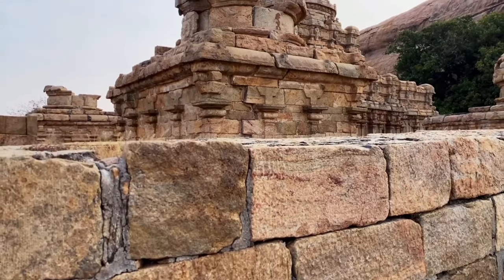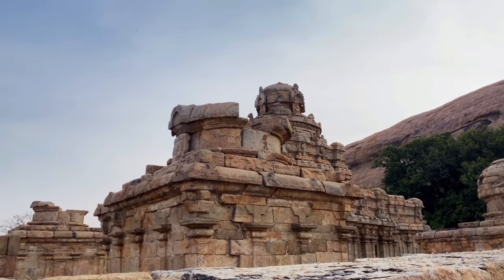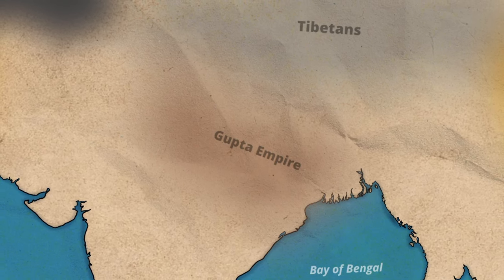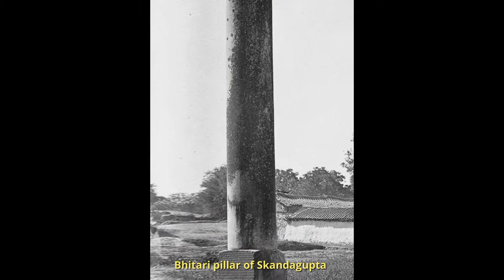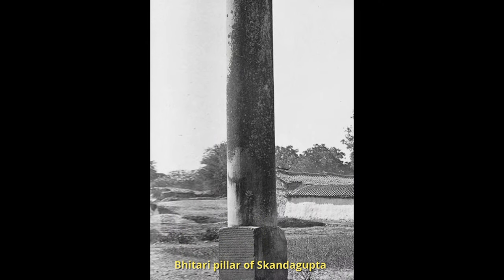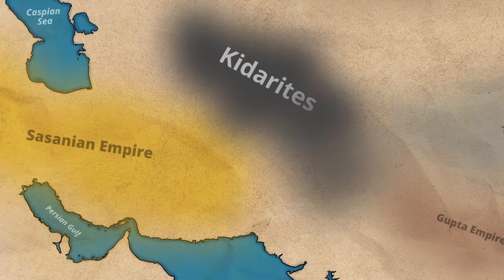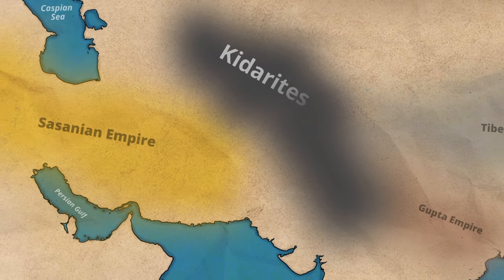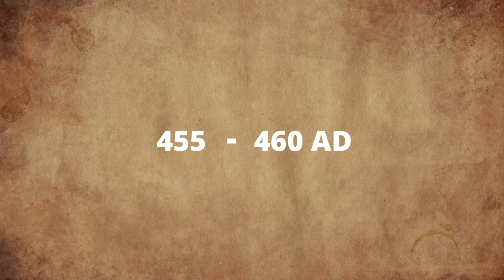Indian sources tell us of these Hunnic people, whom they called the Huna, and tell us of the struggles of the Huna with the Gupta dynasty ruler, who controlled most of the Indian subcontinent at that time. The earliest Indian report on the Huna is in the Batari inscription of the Gupta ruler Skandigupta, where the king is said to have been in intense conflict with the Huna. While the exact date of the first clash of the Huna and the Gupta empire is debatable, we can be sure that it occurred between 455 and 460 AD.